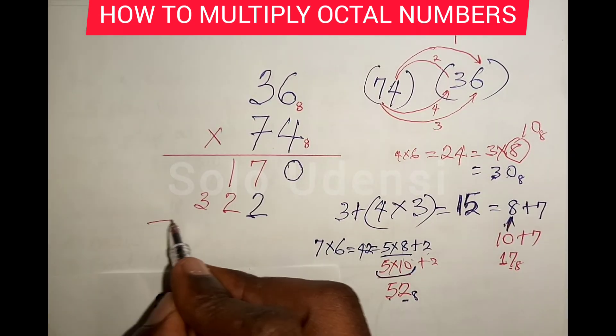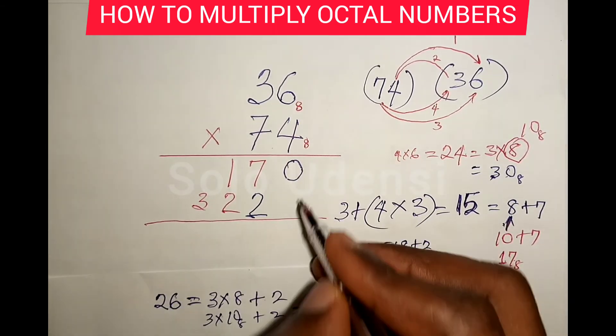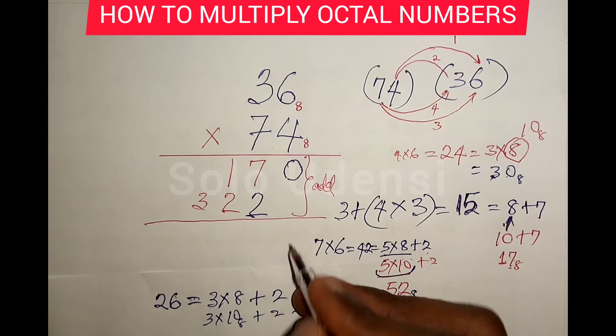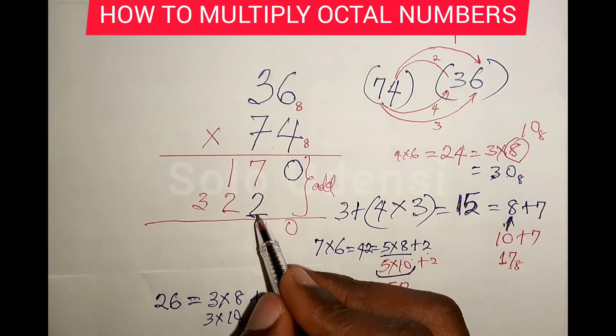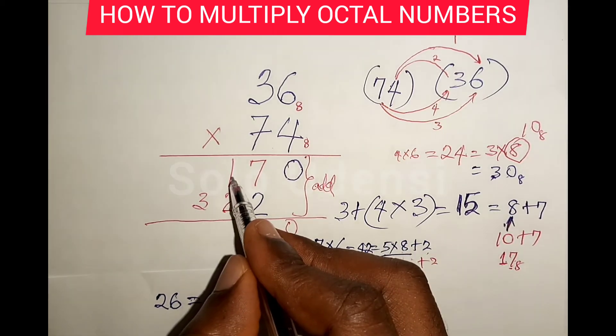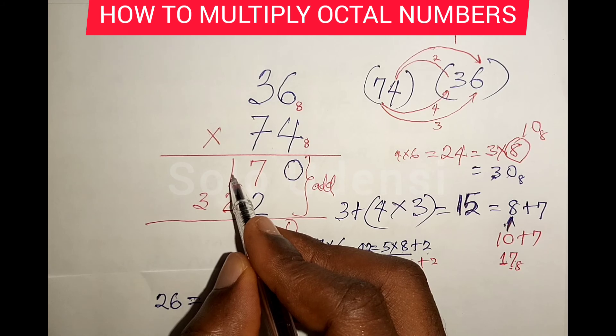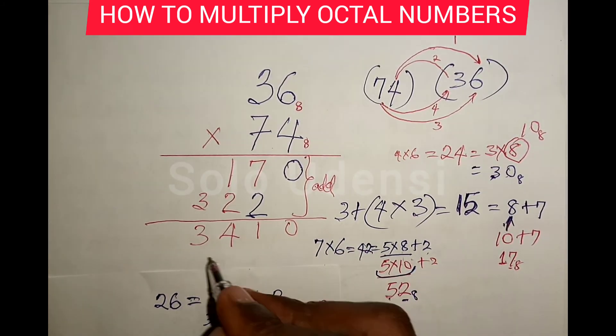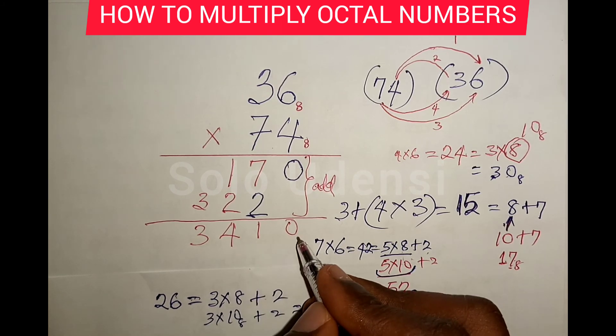So now we add. You know how to add. Zero plus zero. This plus this is nine. Remember eight is one zero, so nine is one one. You write one, carry one. Put one here. It is two, four. So the answer is three, four, one, zero base eight.